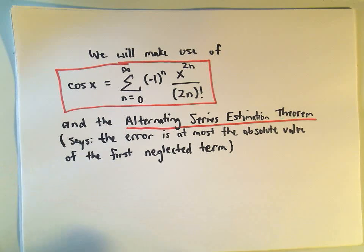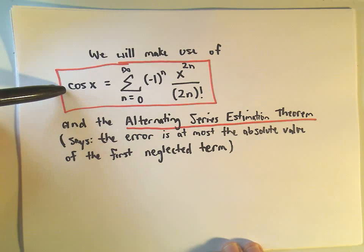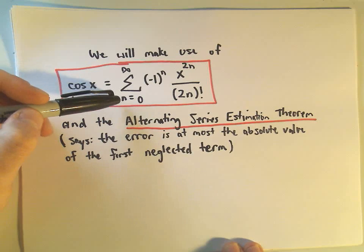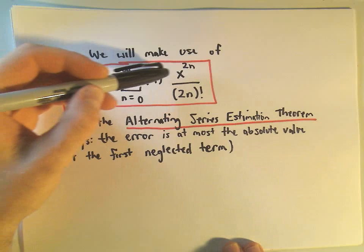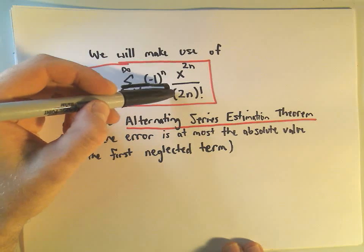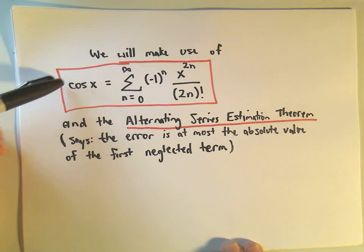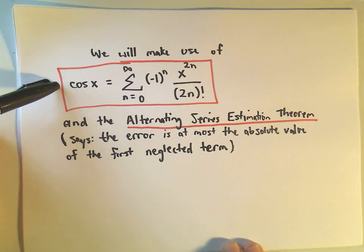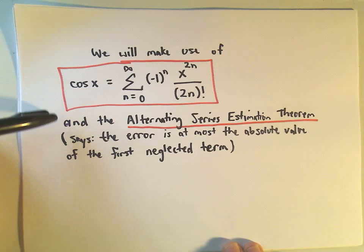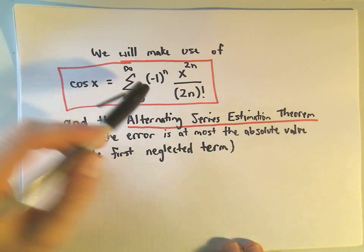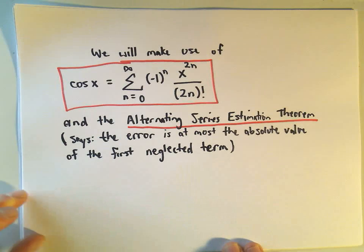We're going to use the power series representation of cosine x. The power series representation for cosine x is the sum from n equals 0 to infinity of negative 1 to the n, times x raised to the 2n, all over 2n factorial. It's not too difficult to derive this, but it's certainly useful to have memorized. We're also going to use the alternating series estimation theorem, as we're going to get an alternating series here.